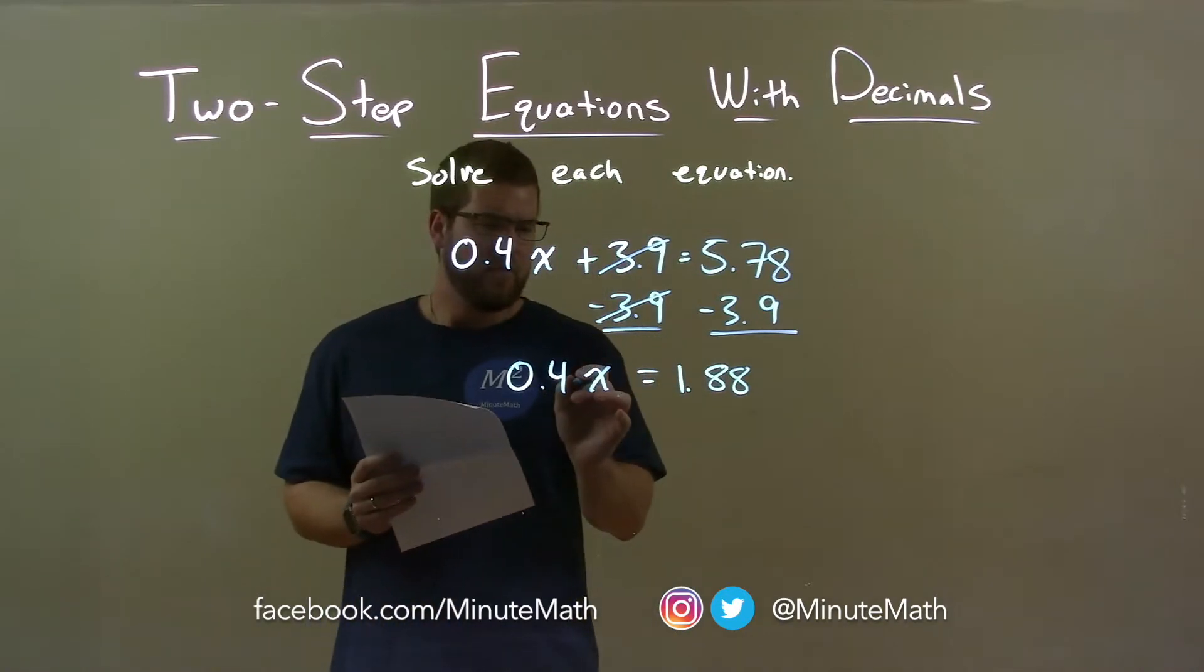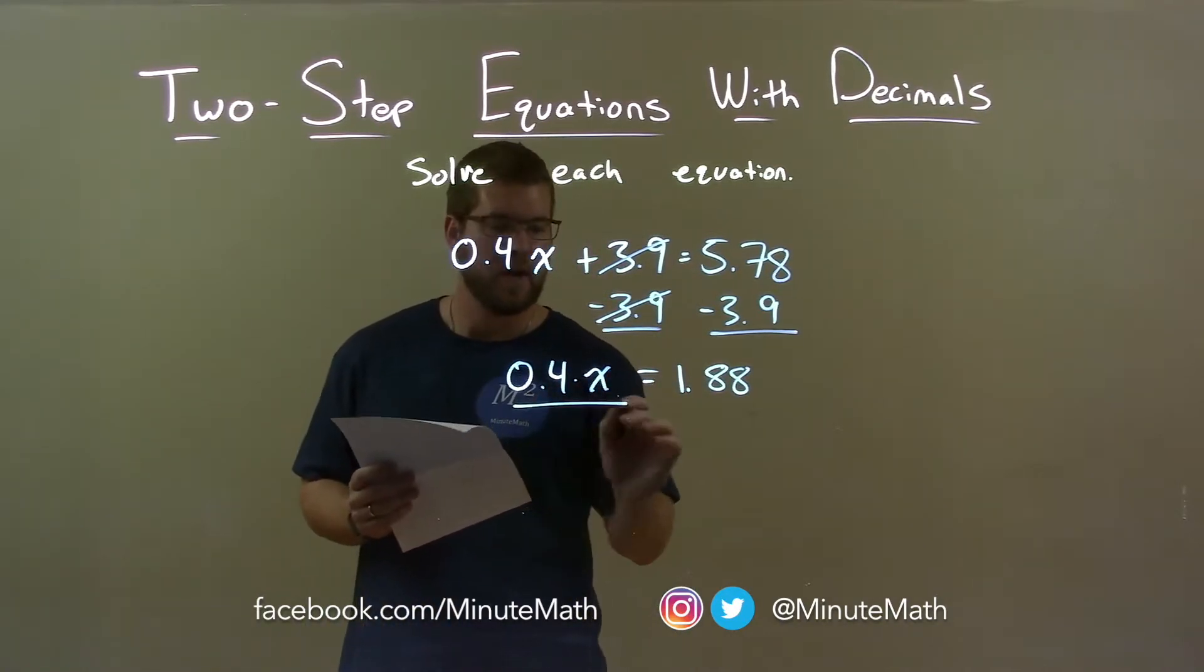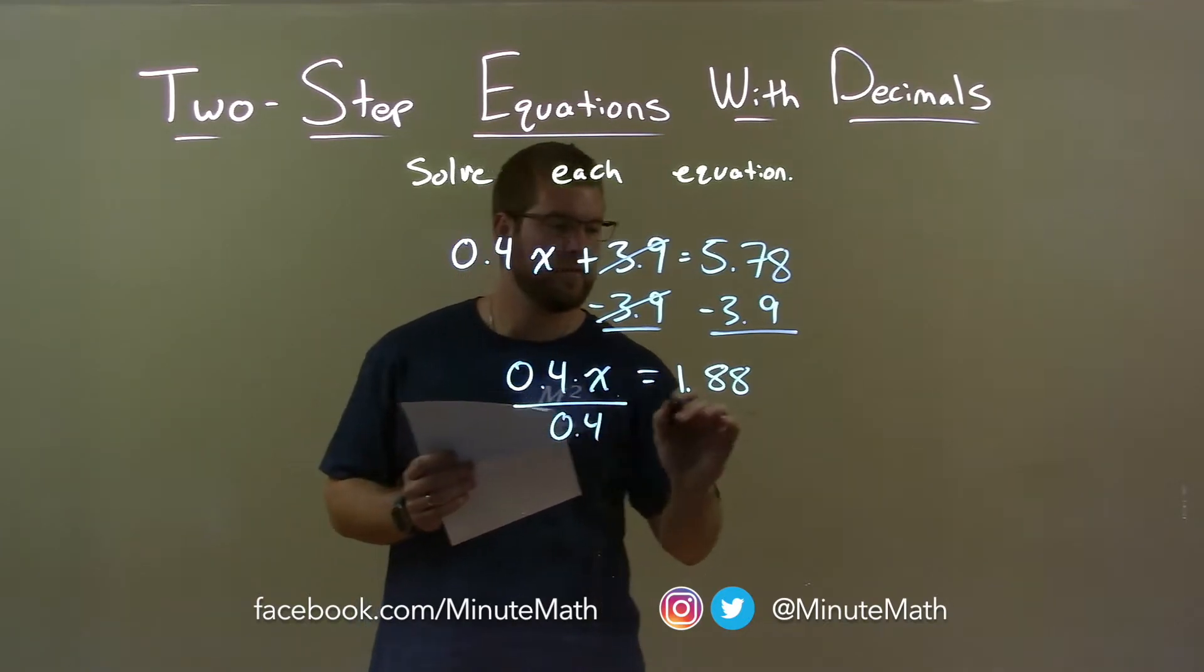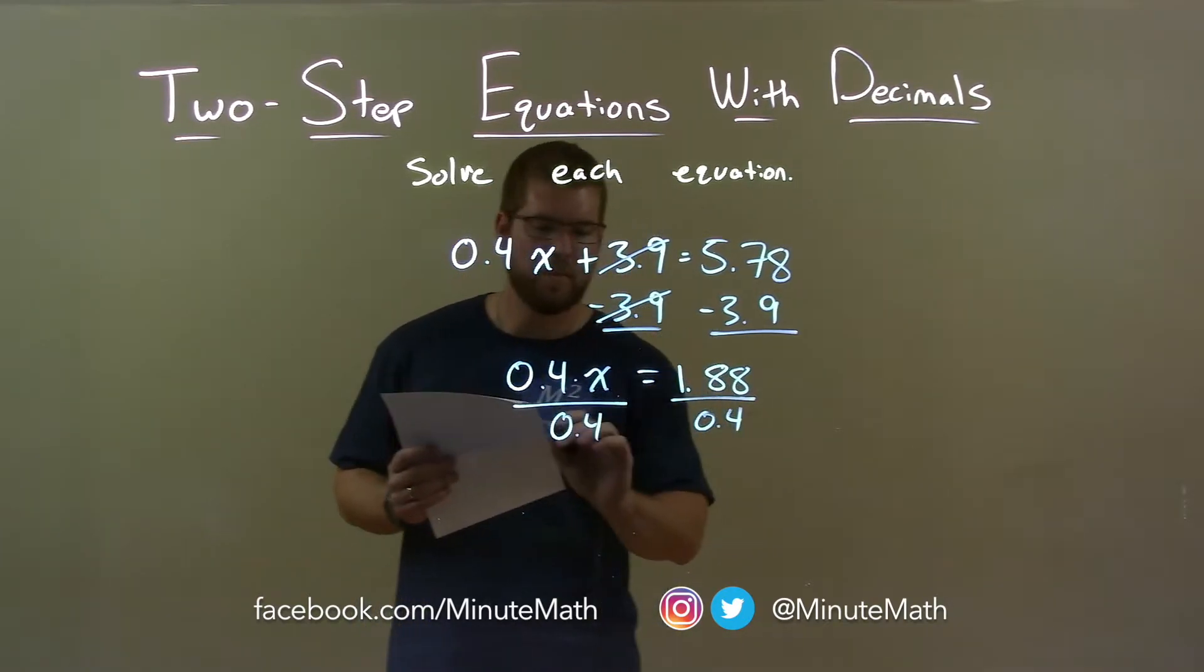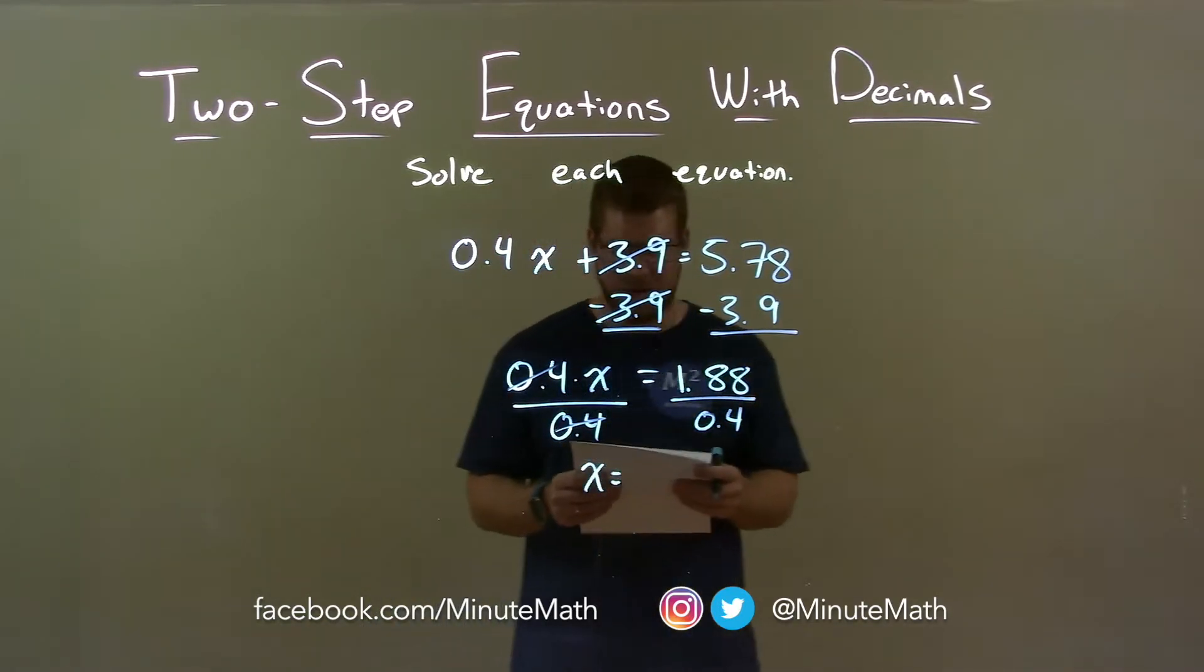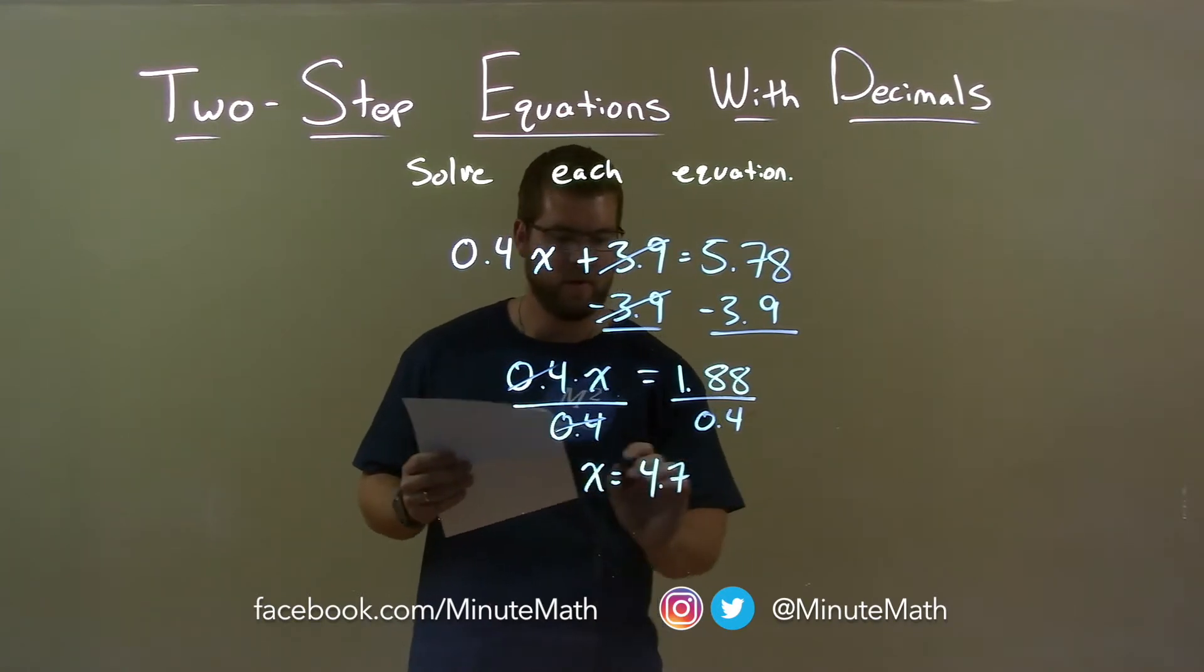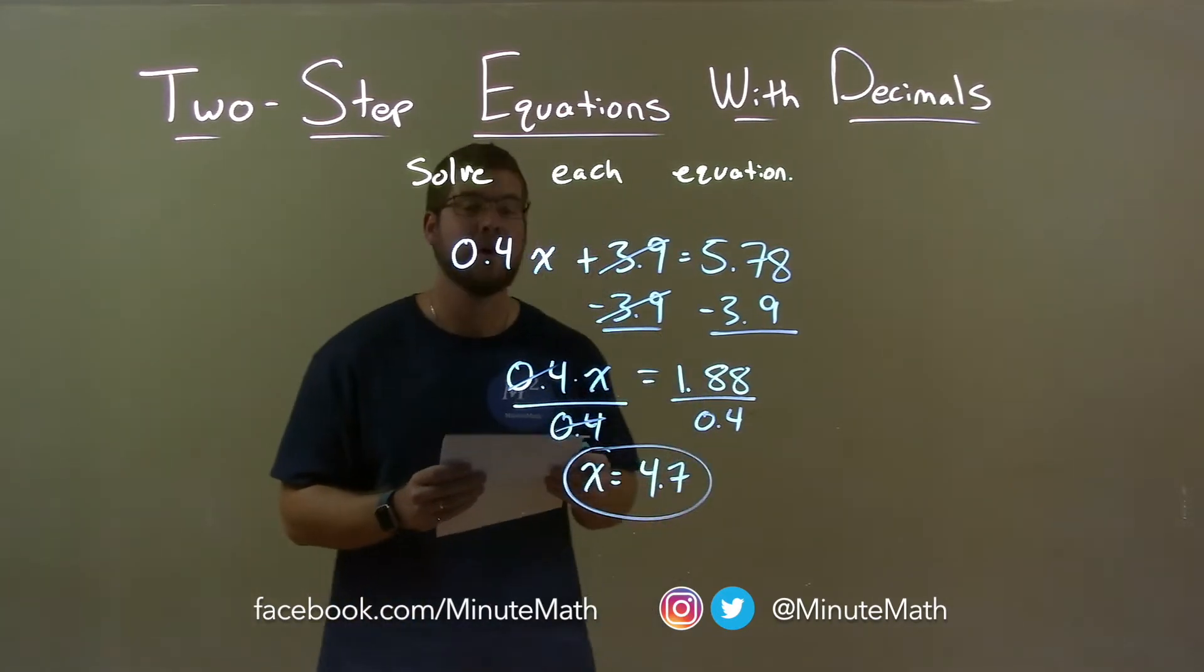Alright, now 0.4 times x, right? Opposite of multiplication is division. Divide both sides by 0.4 and I'm left with 0.4 cancelled, x by itself on the left. On the right, 1.88 divided by 0.4 is 4.7. And so x equals 4.7 is my final answer.